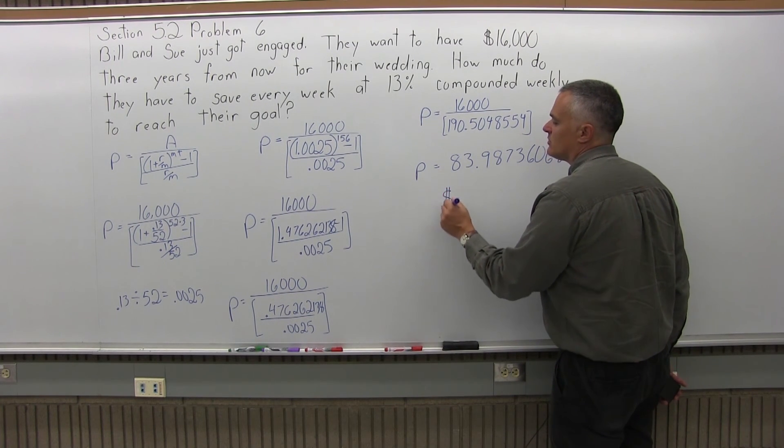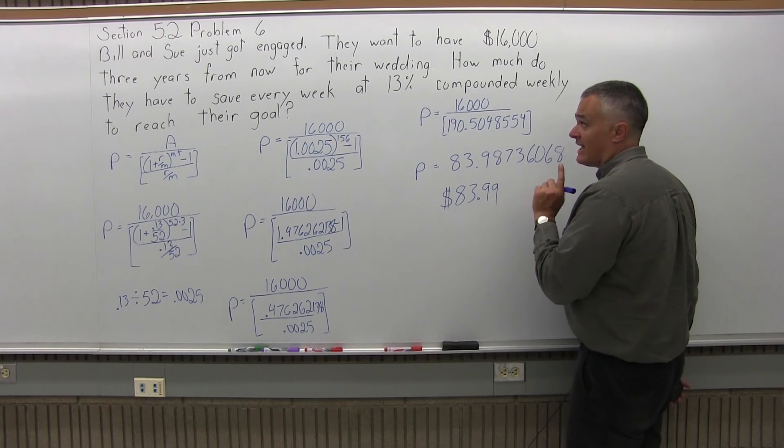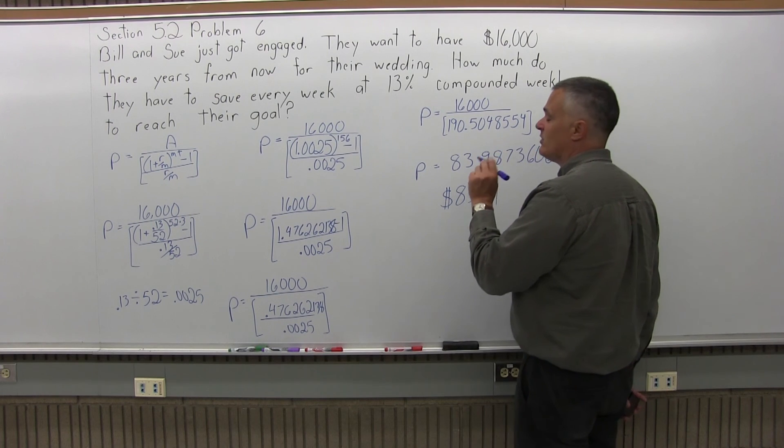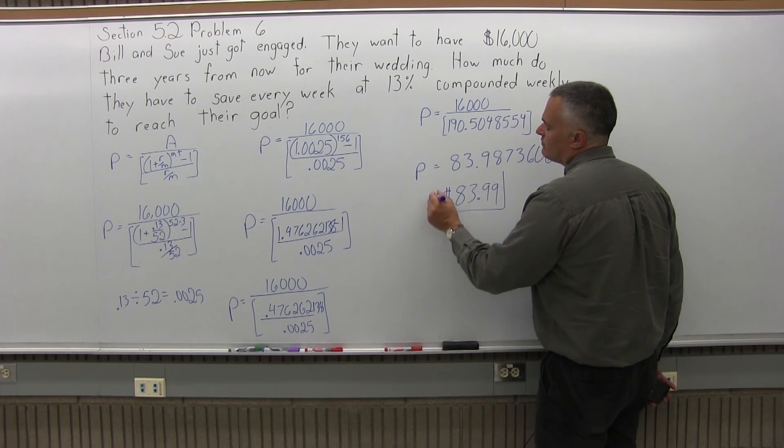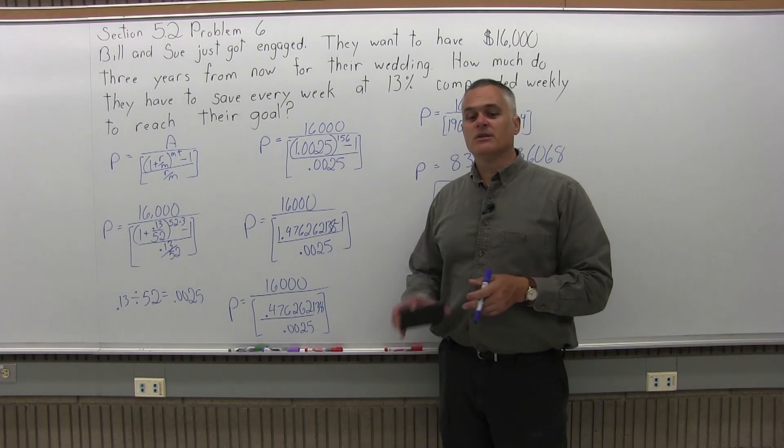So my final answer will be $83.99 every week. That's not every month, it's every week. So if they save within a little bit of roundoff, $84 a week, in three years they'll have the $16,000 they need for their wedding.